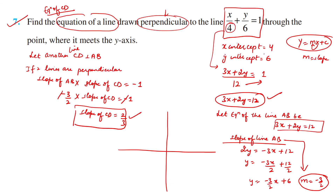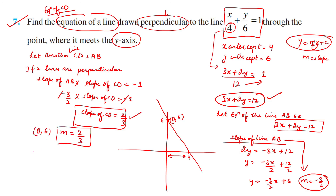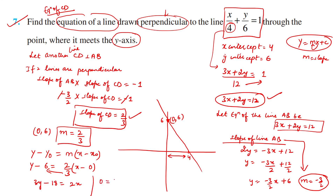The line AB meets the y-axis when x = 0, giving y = 6, so the point is (0, 6). Using point-slope form for line CD: y - 6 = (2/3)(x - 0), giving 3y - 18 = 2x, so 2x - 3y + 18 = 0. This is the required equation of the line.